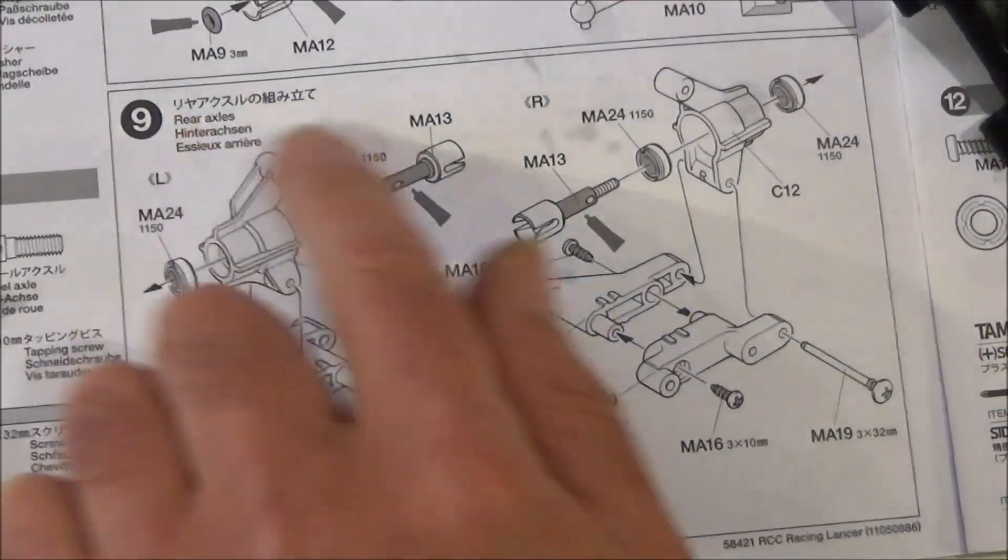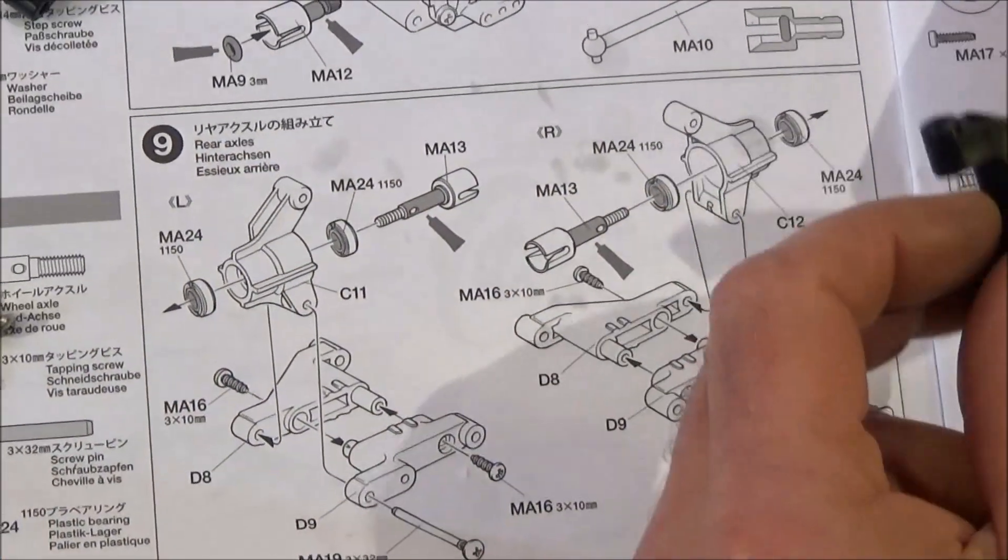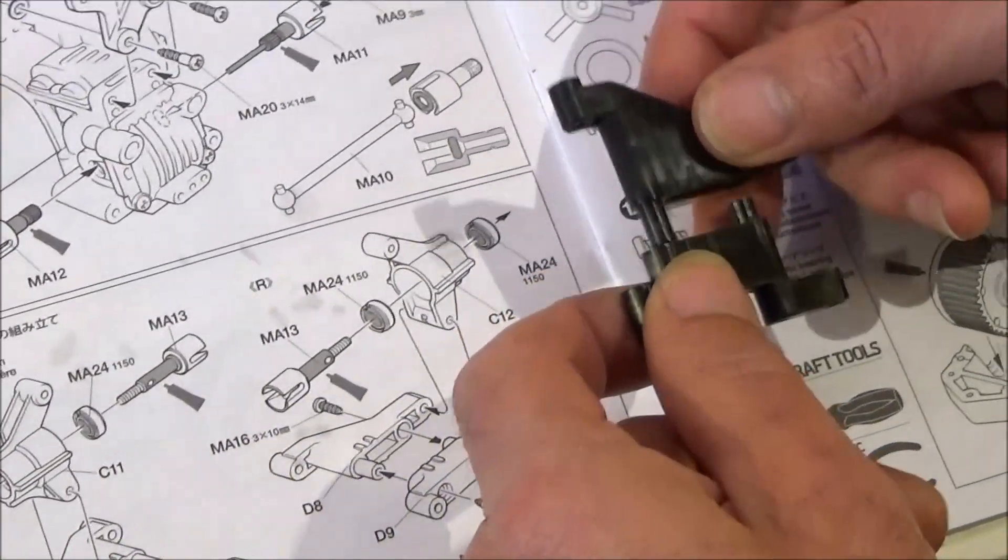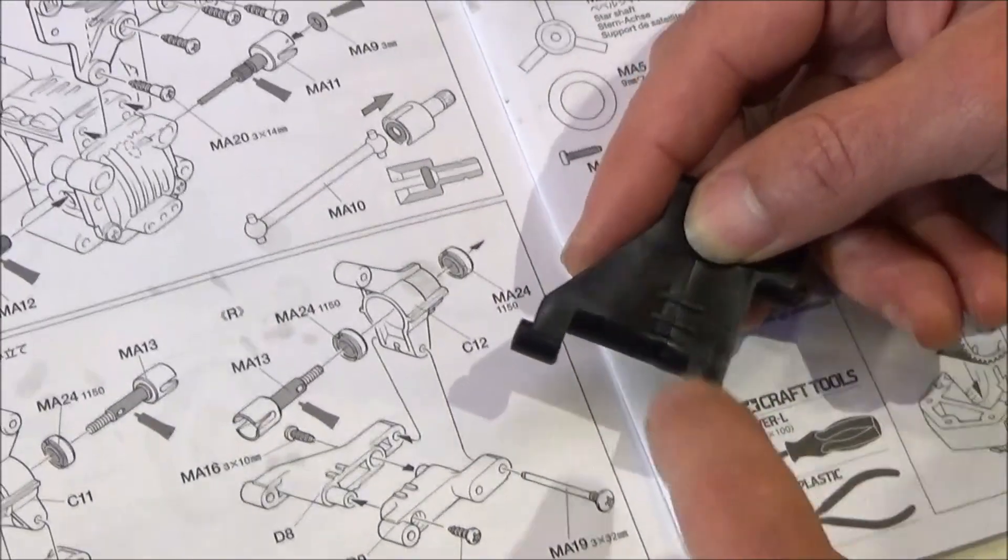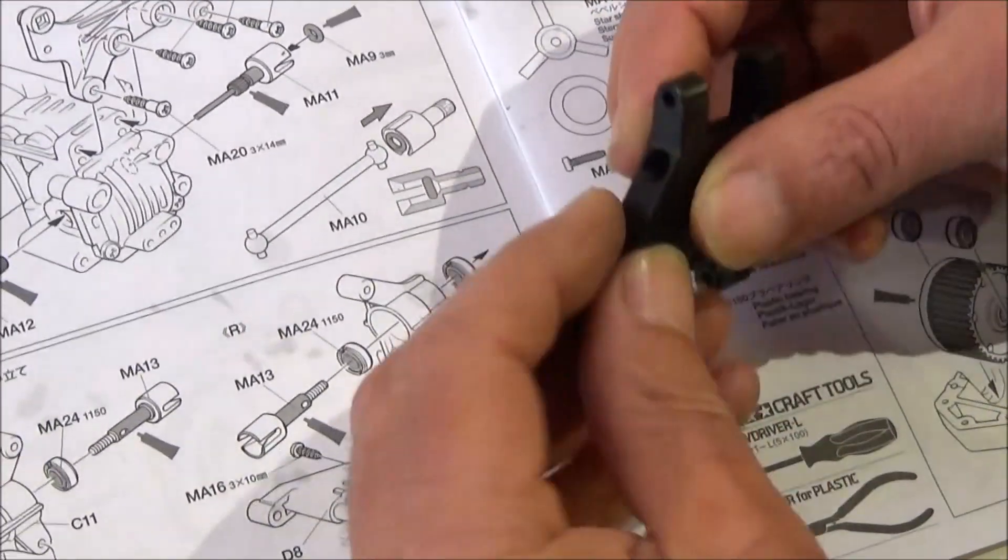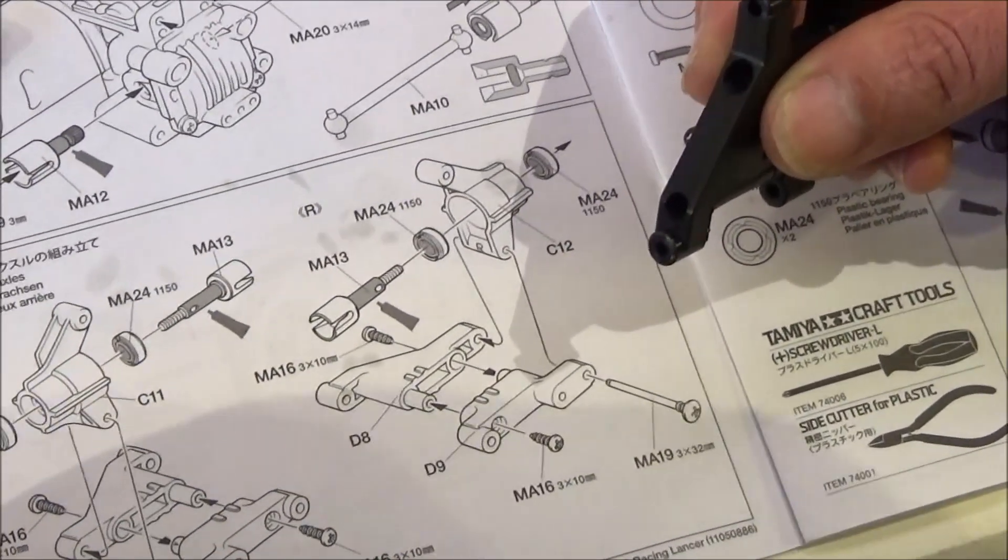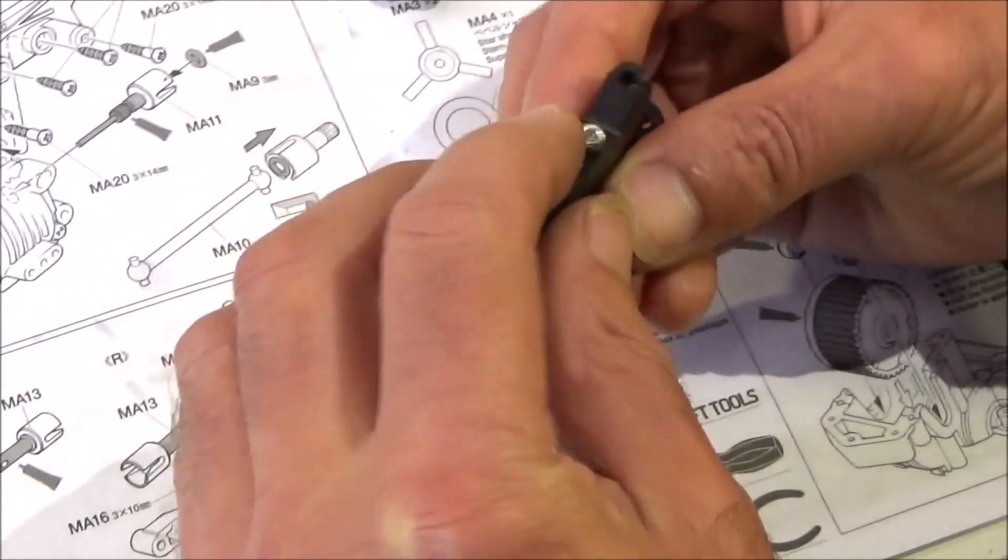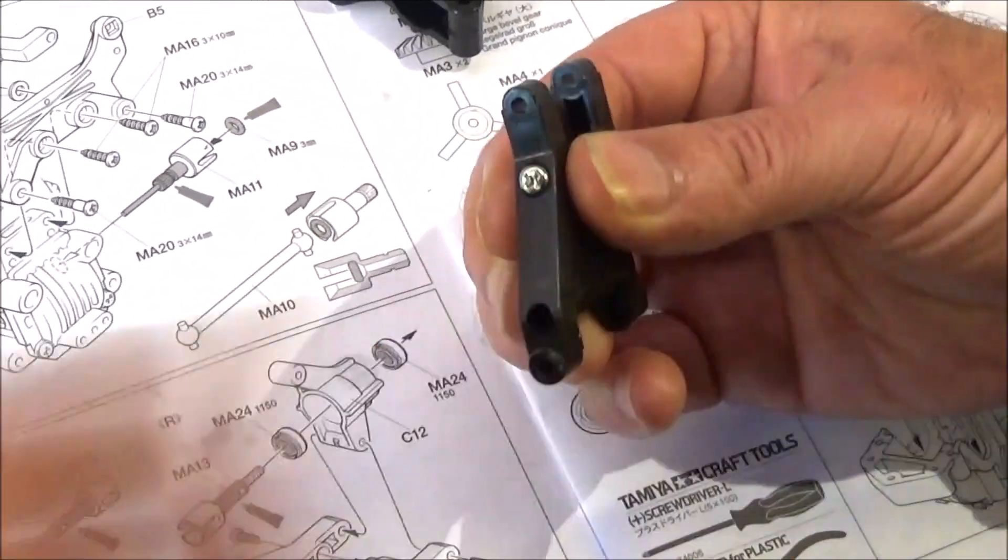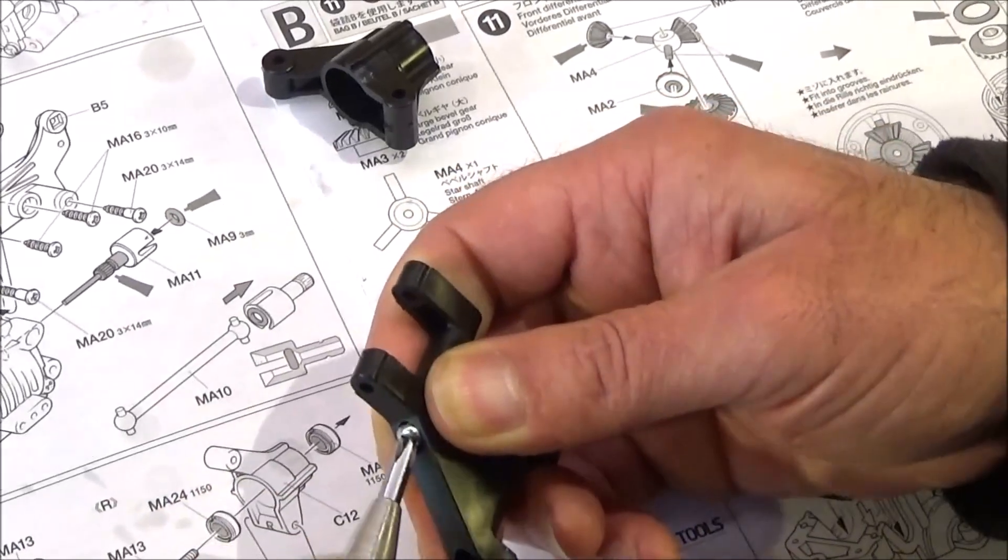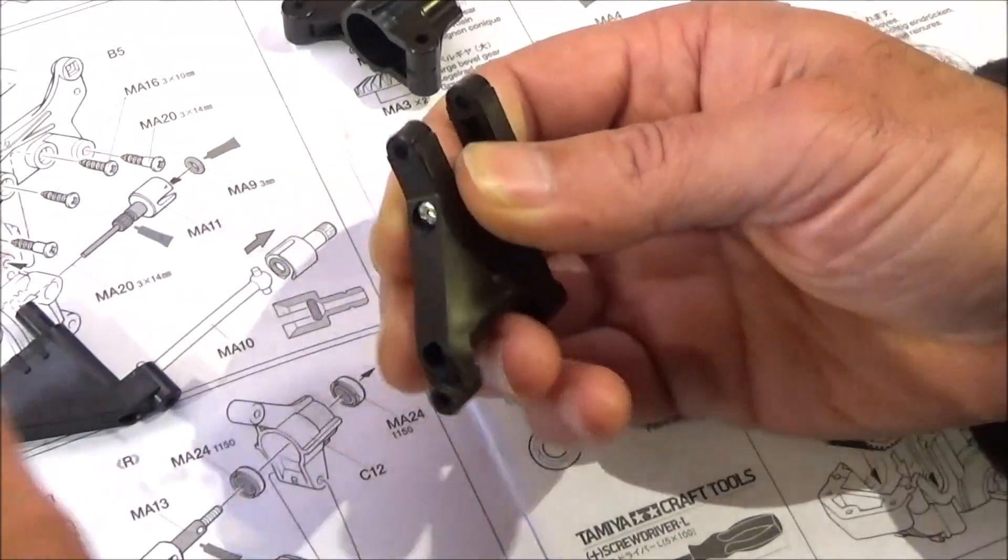Step nine. It says rear axles, but the rear axles are involved in this step. But basically it's what we call the lower wishbones. Make sure you line up the two bits of plastic. You know you've got it the right way around. Get your 10 mil long screw. Drop it in there. Just build up these two. That one on that one.